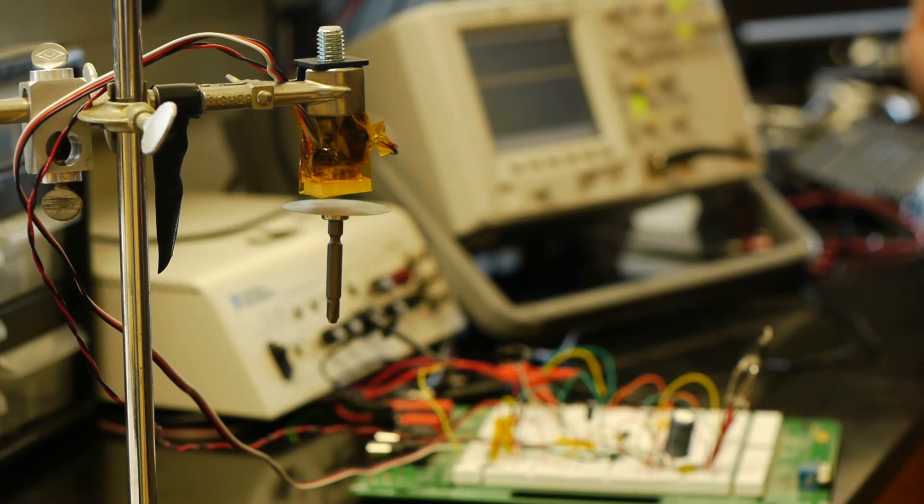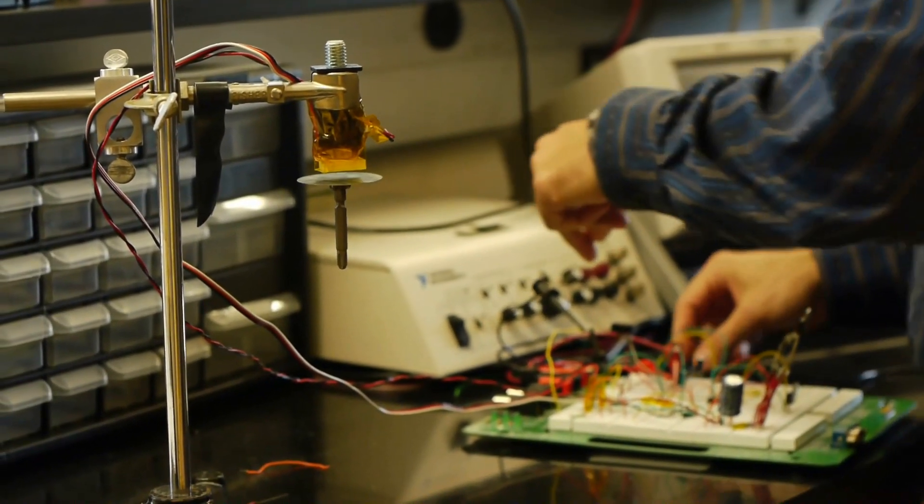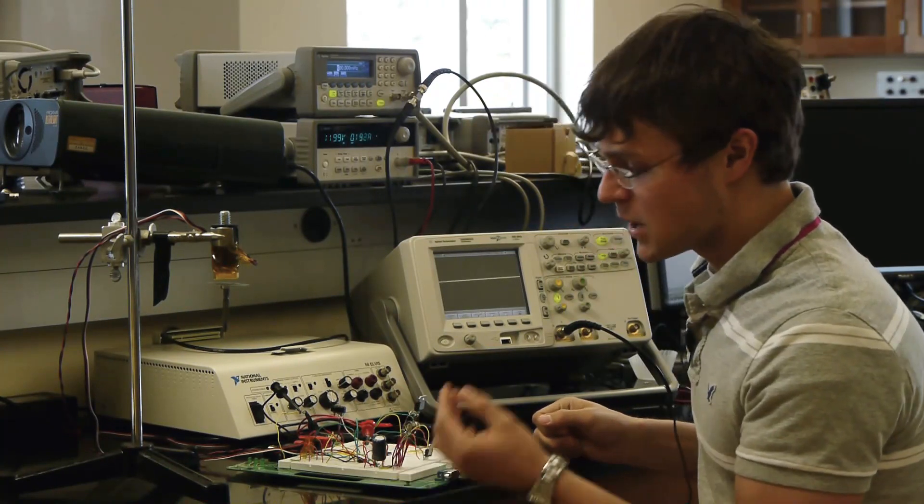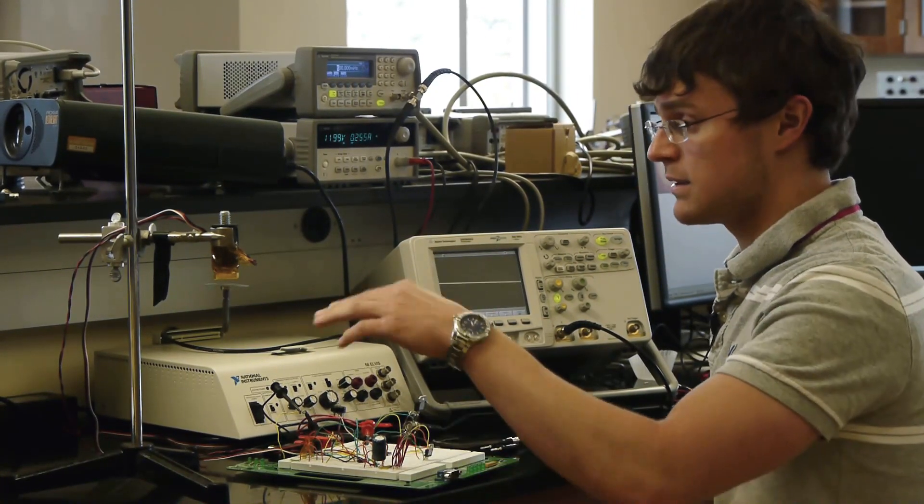How this works is we have a small sensor in here. As the magnet gets closer, the magnetic field increases, and it feeds back into the circuit into this comparator chip. As it gets closer, this comparator chip decreases the voltage going into the electromagnet, thus allowing the magnet to fall back down.